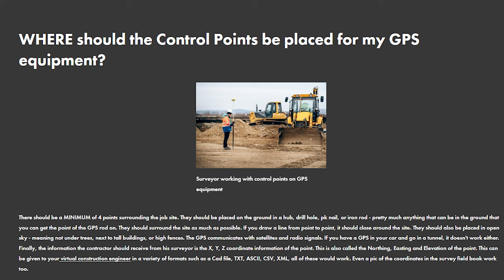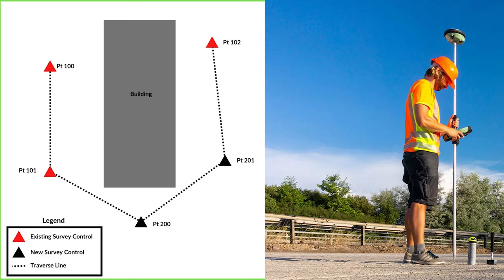Where should control points be placed for GPS equipment? There should be a minimum of four points surrounding the job site. They should be placed on the ground in a hub drill hole, PK nail, or iron rod — we've seen a lot of these various types at Canada's Wonderland specifically, and Six Flags Great Adventure has used them more recently on their new coaster being built. Essentially anything that can be in the ground that you can get the point of the GPS rod on. They should surround the site as much as possible — if you draw a line from point to point, it should close around the site.